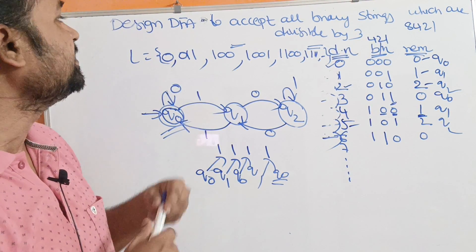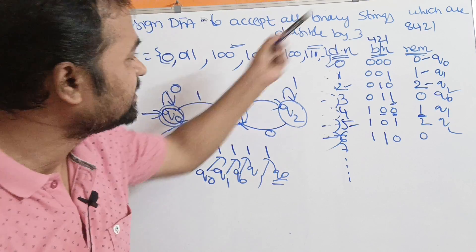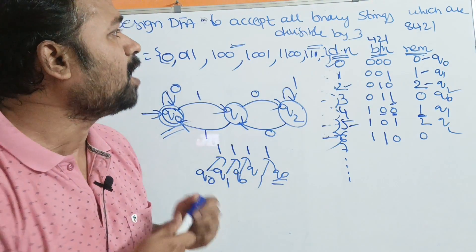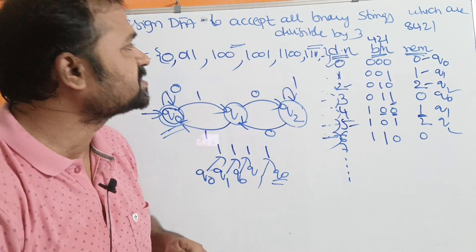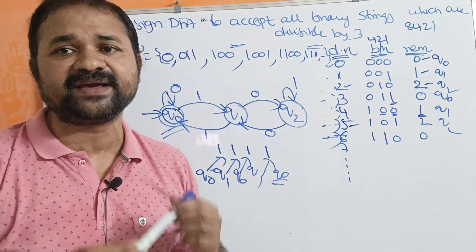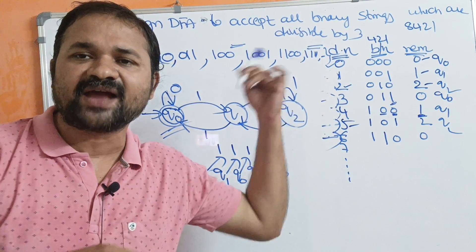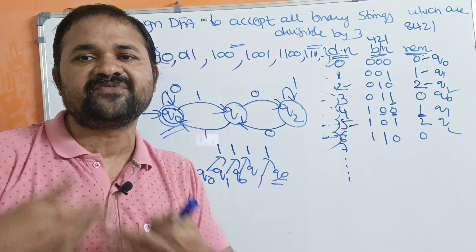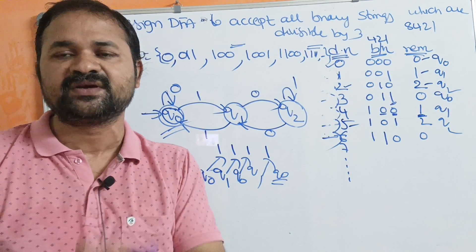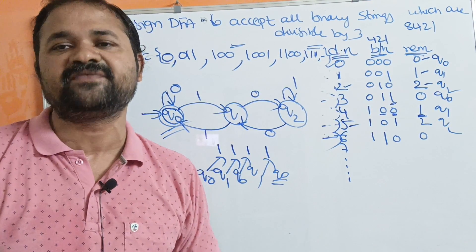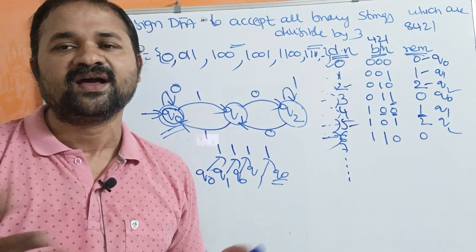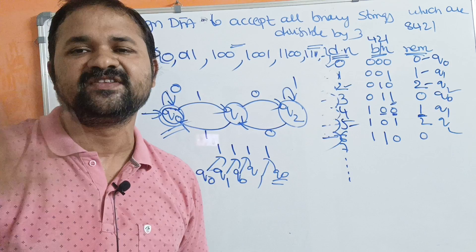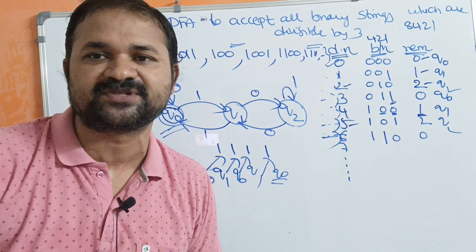This is the DFA for accepting all binary strings which are divisible by 3. Likewise, we can draw the DFA for divisible by 4 and divisible by 5 very easily. In the next videos, we will see those two examples as well.